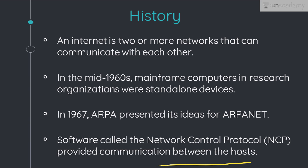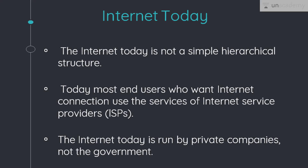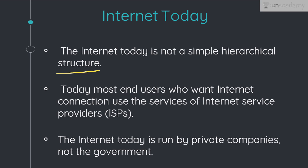The internet has come a long way since the 1960s. The internet today is not a simple hierarchical structure — it is made up of many wide and local area networks joined by connecting devices and switching stations. It is difficult to give an accurate representation of the internet because it is continuously changing: new networks are being added, existing networks are adding addresses, and networks of defunct companies are being removed. Today, most end users who want an internet connection use the services of Internet Service Providers, or ISPs. And importantly, the internet today is run by private companies and not by the government.